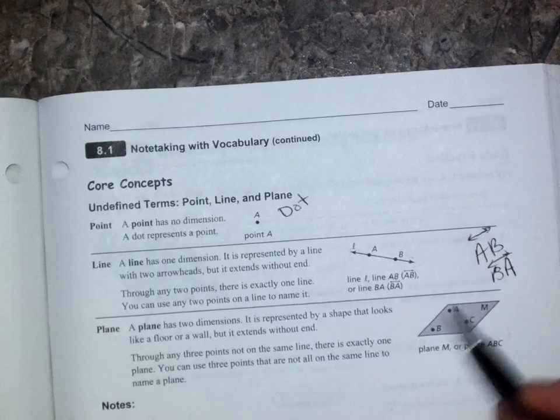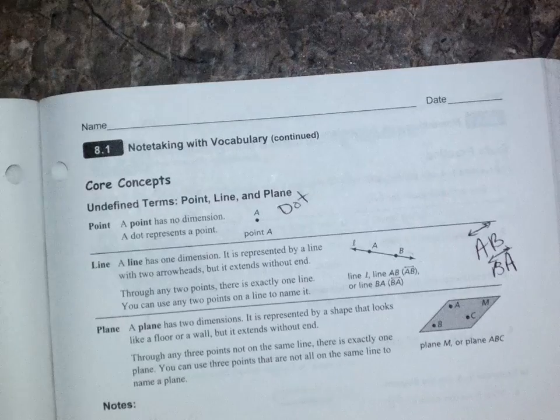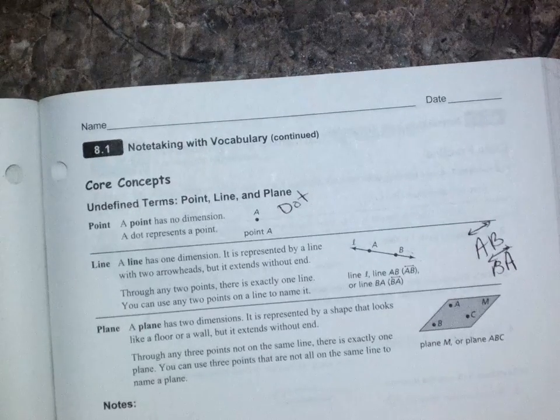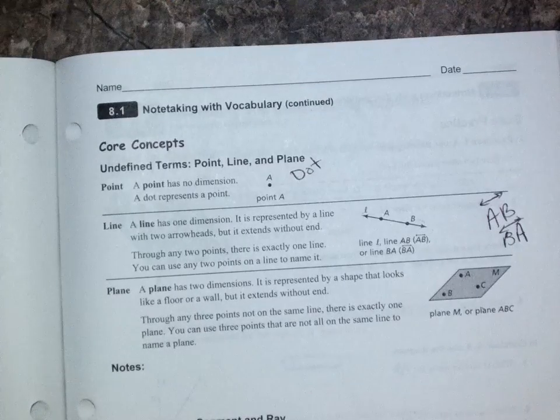Now, plane is a flat surface. It goes on forever and ever in both directions, but it has no thickness either. That's why these are undefined terms, because they really, you know, if they have no thickness, they technically could not even exist. But they have properties, right?